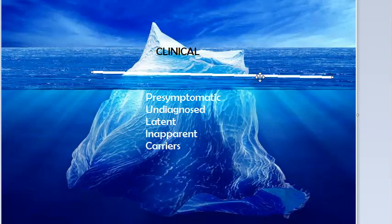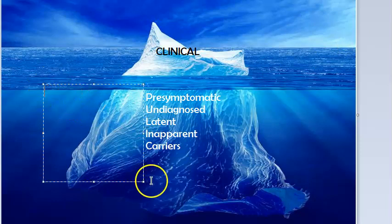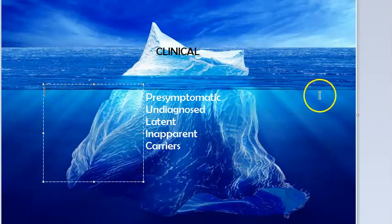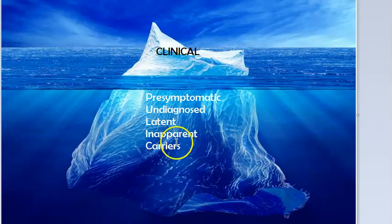The surface line indicates the demarcation between the apparent and the inapparent infections. The water represents the healthy population — the disease is the iceberg and the water around it is the healthy population.